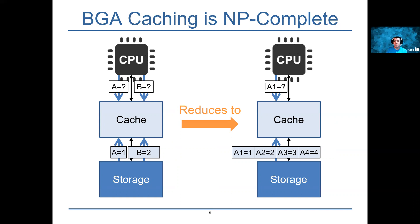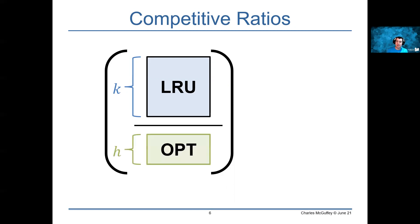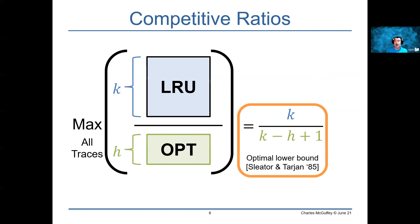But the majority of our work is focused on competitive ratios, which looks at comparing some deterministic online algorithm, in this case LRU of size k, against the optimal algorithm that can know the trace in advance of size h. We're trying to take the ratio of the cost of our online algorithm over the cost of the optimal algorithm, and we're taking the maximum ratio across all traces. For traditional caching problems, and in particular LRU, this ratio is known to be k over k minus h plus 1, and this is an optimal lower bound proven by Sleator and Tarjan in 1985.